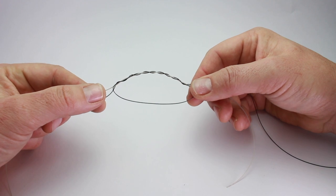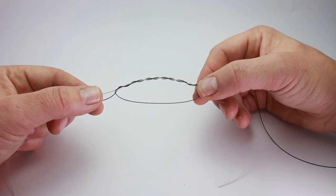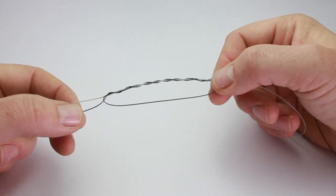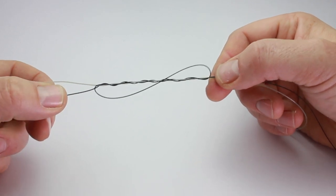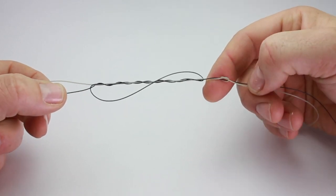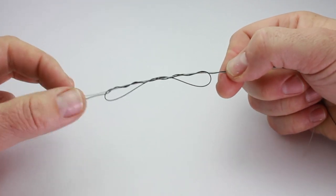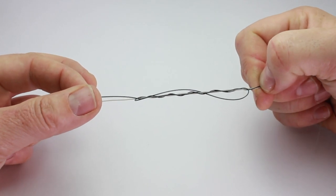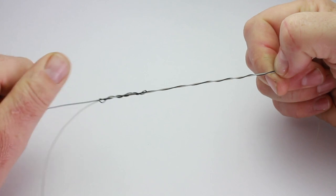As you can see, you've got the loop and then the line running through it one way and back the other. At this point you would moisten the line. Then you're going to pull the tail end of the main line. Hold on to the knot here with your finger and thumb just loosely, and then pull that tail from left to right in that direction.